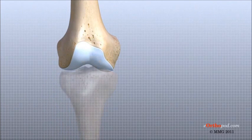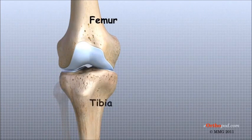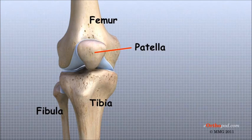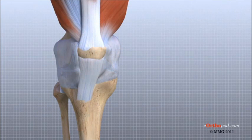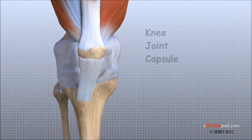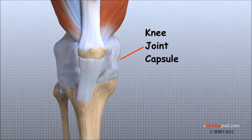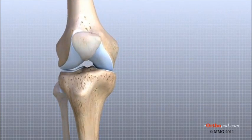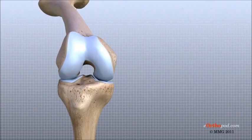The knee is the joint where the femur and the tibia meet. The patella, or kneecap, is made of bone and sits in front of the knee. The knee joint is a synovial joint — synovial joints are enclosed by a ligament capsule and contain a fluid called synovial fluid that lubricates the joint. The end of the femur joins the top of the tibia to create the knee joint.